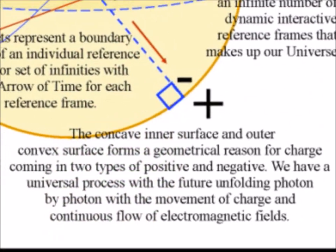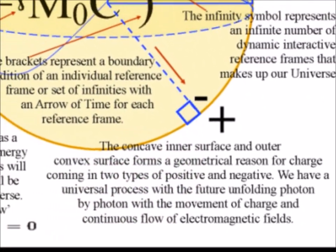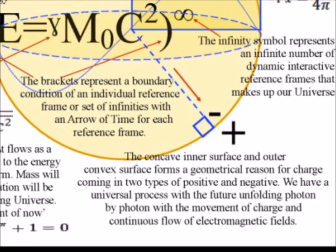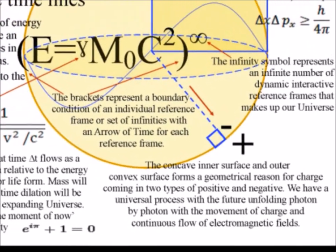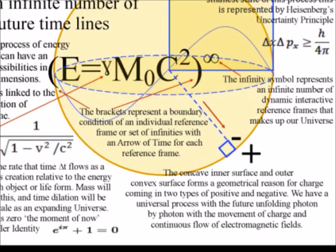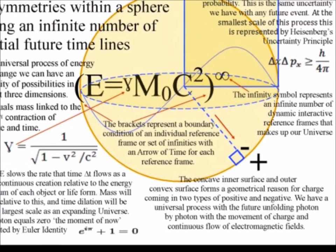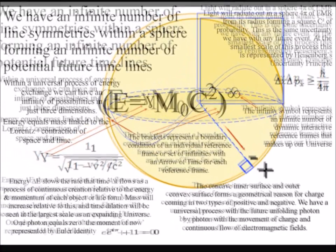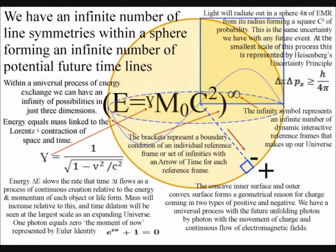In this theory, the two-dimensional surface of the sphere forms a dynamic boundary condition, with the concave inner surface forming negative charge, and the convex outer surface forming positive charge.